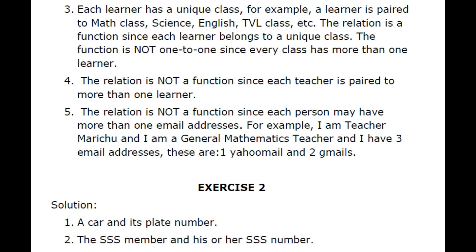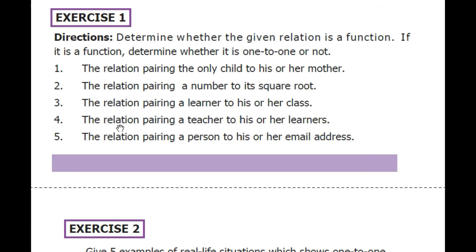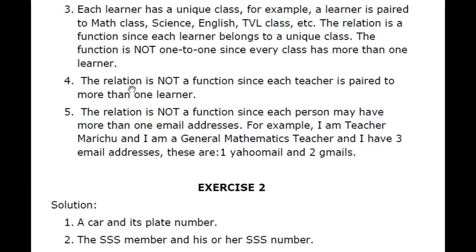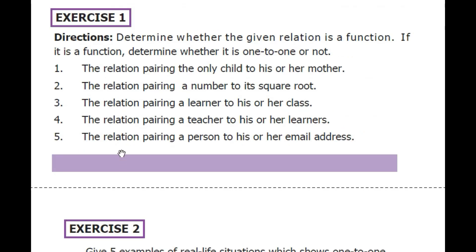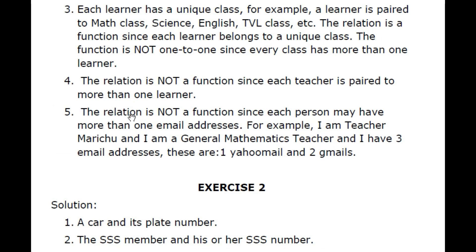Number 4: The relation pairing a teacher to his or her learners. The relation is not a function since each teacher is paired to more than one learner. Number 5: The relation pairing a person to his or her email address. The relation is not a function since each person may have more than one email address. For example, Teacher Marichu has three email addresses — one Yahoo mail and two Gmails. So the relation is one-to-many, and therefore not a function.